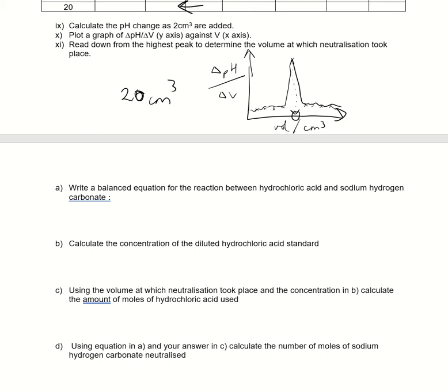Write a balanced equation for the reaction between hydrochloric acid and sodium hydrogen carbonate. So HCl, NaHCO3. Again, acid plus carbonate. We've got the salt, carbon dioxide, water for balancing it. 1, 1, 1, 1, 1, 2, 2, 3. Yep, balanced 1-to-1 ratio in there.